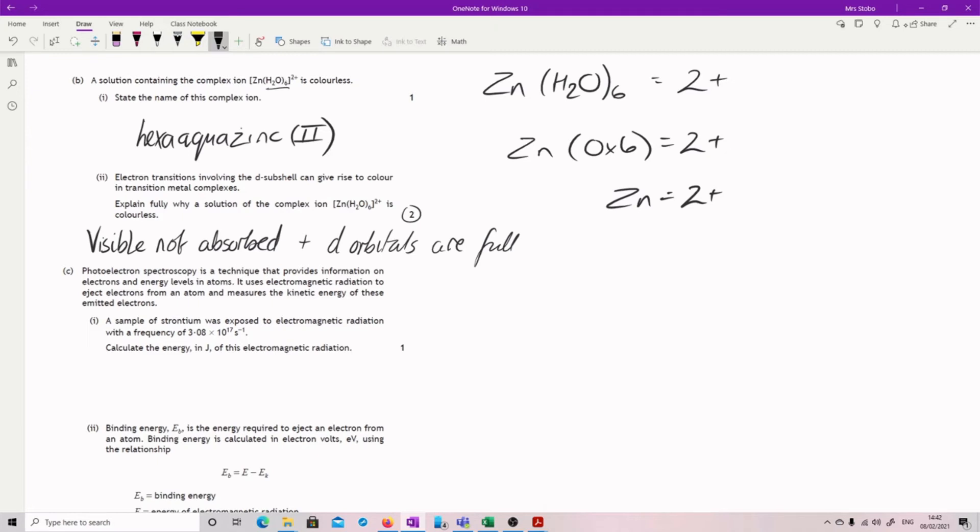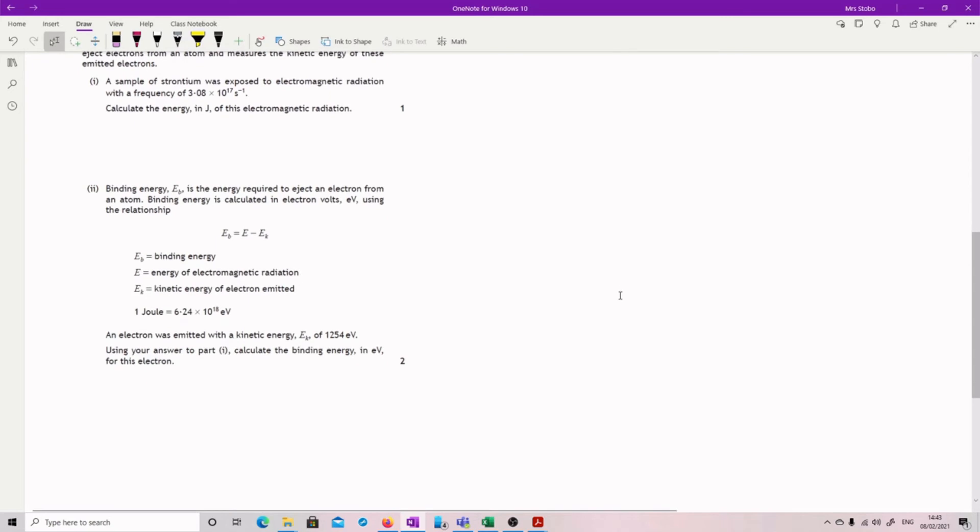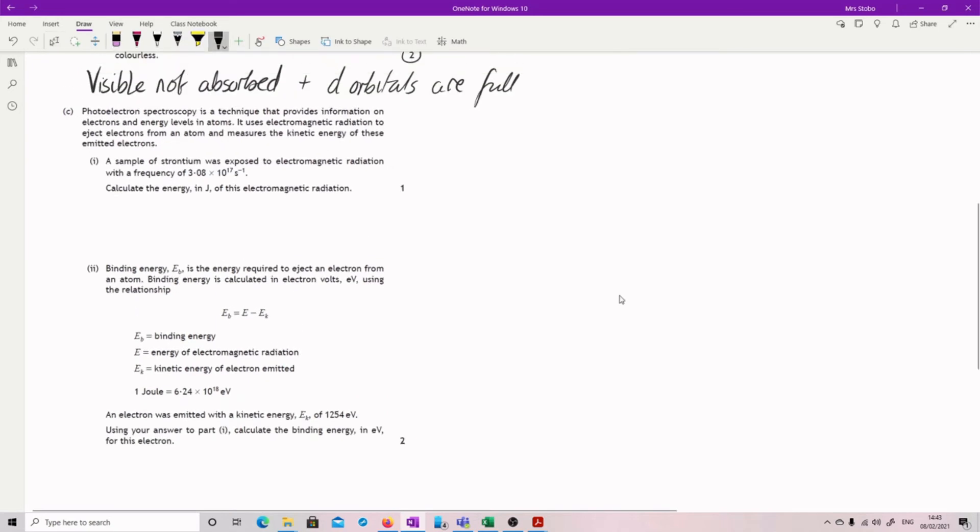So we've then got a couple of calculations. Photoelectron spectroscopy is a technique that provides information on electrons and energy levels. A sample of strontium is exposed to electromagnetic radiation with a frequency of 3.08 times 10 to the 17 per second. Calculate the energy in joules of this electromagnetic radiation. So we're just looking at our formula, just E equals hf from the data book.